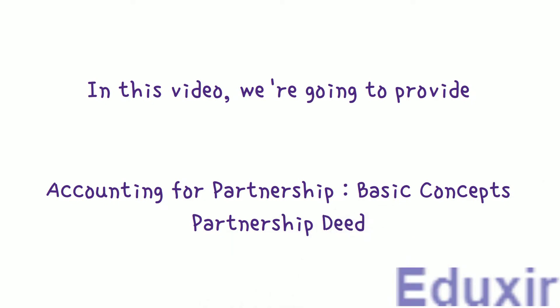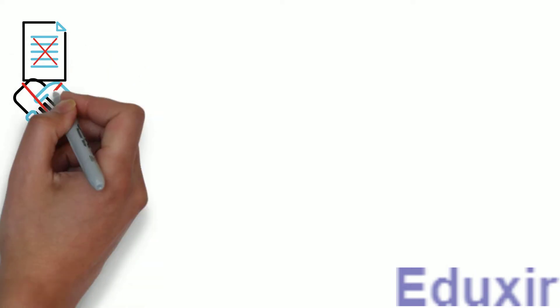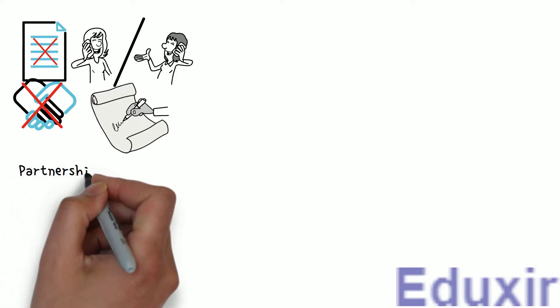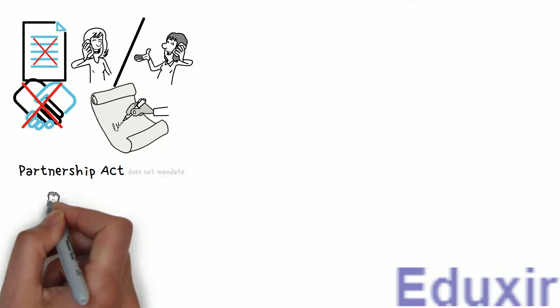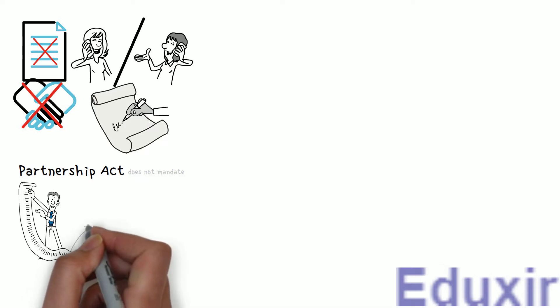In the previous video, we discussed about the nature of partnership and essential features of partnership. We also learned that when two or more partners join hands and make an agreement, then the partnership comes into existence. Without agreement, there is no partnership. This agreement can be either oral or written. The Partnership Act did not make it mandatory that the partnership agreement should be in writing. But when this agreement is prepared in written form, the document containing all the terms of the agreement is called a partnership deed.